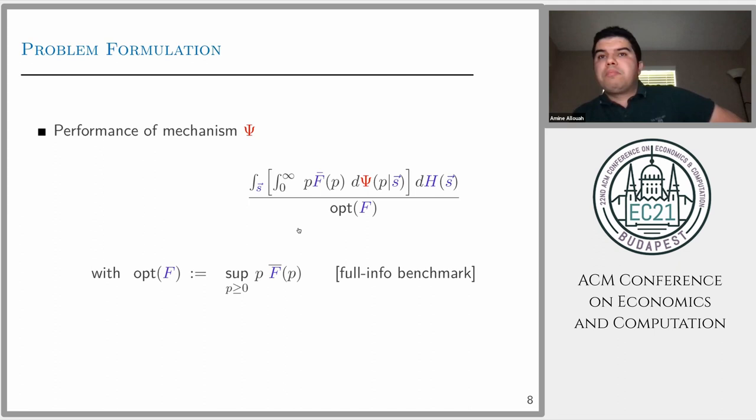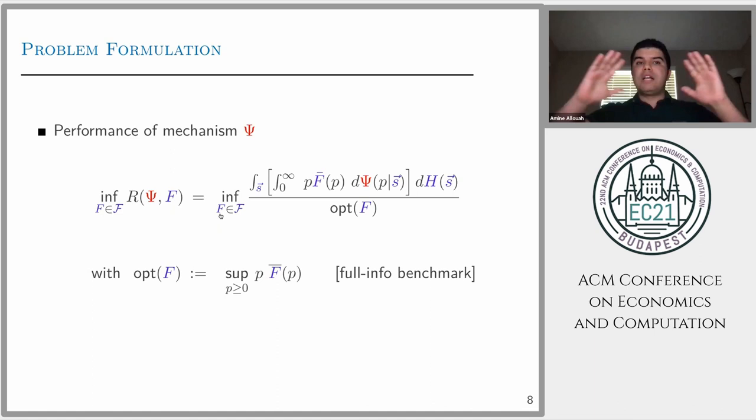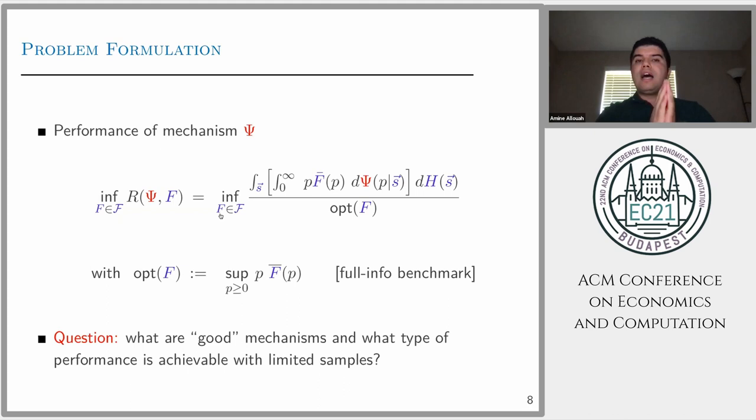It will be hard to judge if a mechanism has good performance, which is why we need to define a benchmark: the Oracle benchmark, meaning the optimal revenue if the seller had known the exact distribution of this buyer. We'll use a competitive ratio approach. We look at the ratio of the mechanism revenue to the optimal. If this ratio is 100%, it means the seller is able to extract the full optimal revenue. The main assumption is that we don't know the exact distribution, but we assume it belongs to some broad class of distributions.